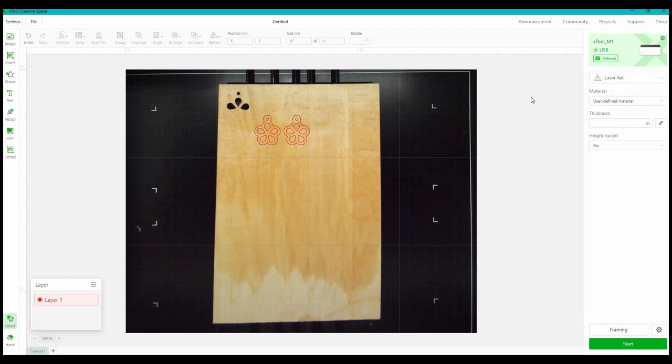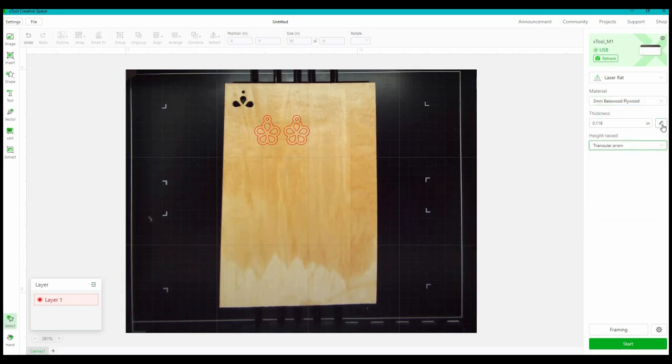So I'm going to click off the design and onto the wood and I'm going to go over here on the right. This is the laser we want and I am using the settings for three millimeter basswood. Then I'm going to hit that it is height raised and then I'm going to click this button over here to auto measure.